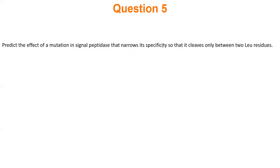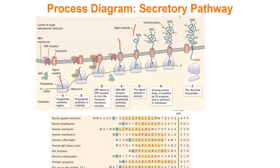Normally the nonpolar section is cut off correctly at the usual cleavage site. If you're cutting between two leucines instead of the proper location, that nonpolar part is not being excised correctly. So what could be the problems with that?